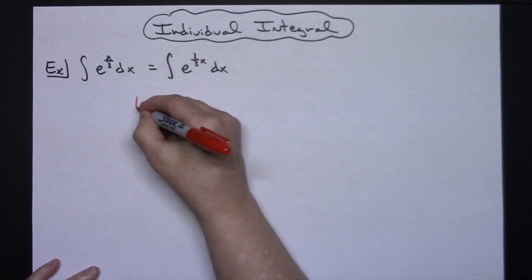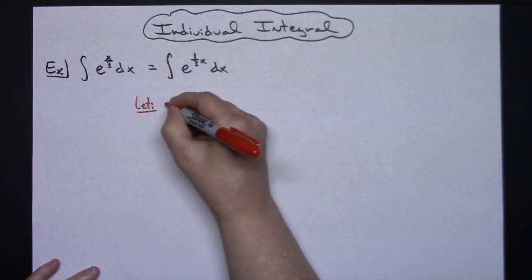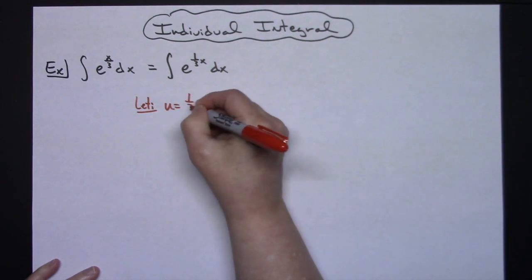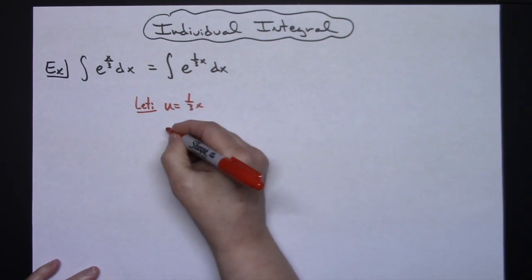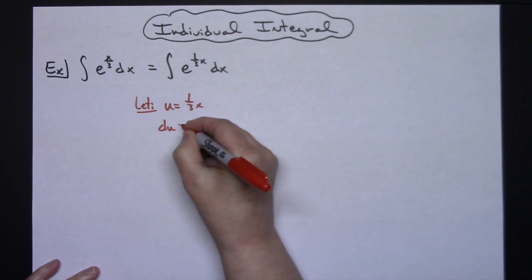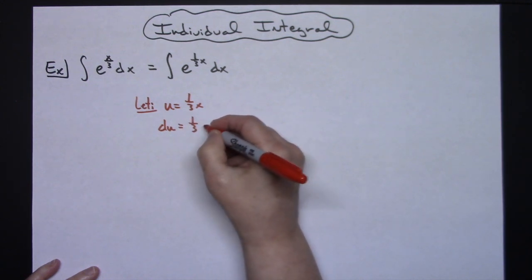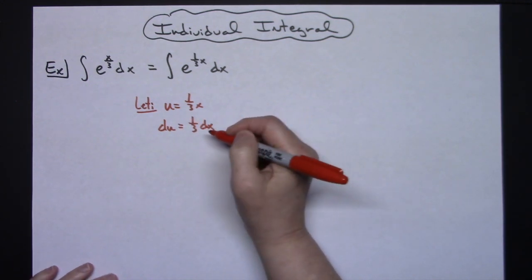Now from there we're going to let our u be that one-third x. It's easy to take the derivative. I can take the derivative there and get a one-third with my dx.